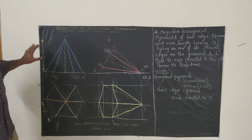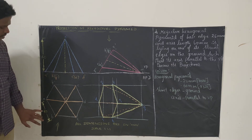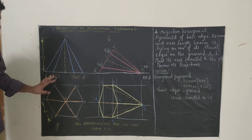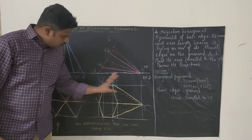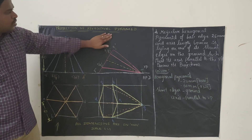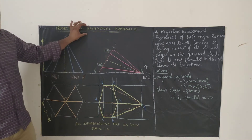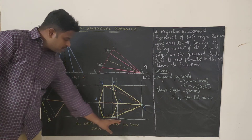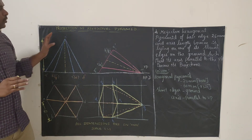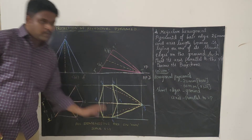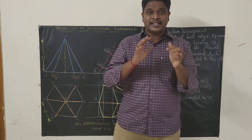For dimensioning: extension lines use a 2H pencil, dimension lines use an H pencil, and numbers and arrowheads use an HP pencil. Write alphabets like A dash, B dash, etc. with your HP pencil. The title 'Projection of Hexagonal Pyramid' should be written in capital letters with a text height of 10 mm. All dimensions are in mm. Scale 1:1 should be written in the bottom-right corner of your A3 sheet with a text height of 5 mm. Draw a border: 20 mm from the left side, and 10 mm from all other sides. Use a circle for your question number.